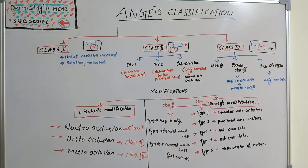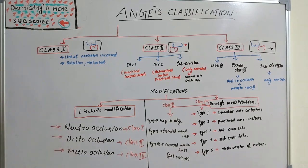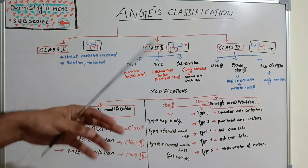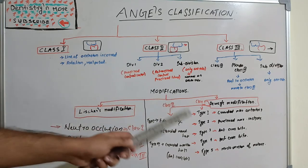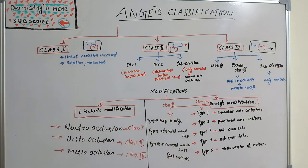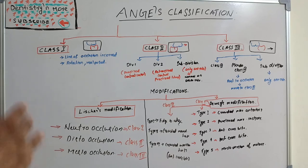This is a simple but commonly exam-asked topic — Angle's classification with its basic 3 types and their modifications. If you have any doubts, please put them in the comment box, and if you would like classes on any further topics, mention that as well. Thank you.